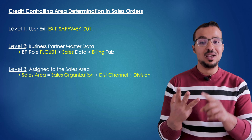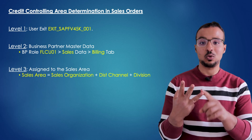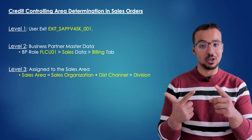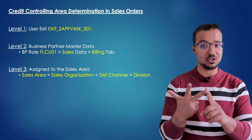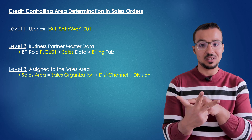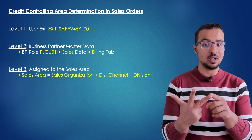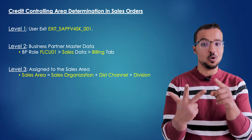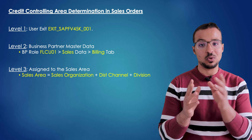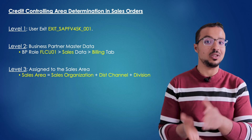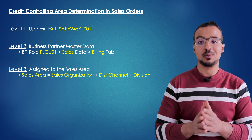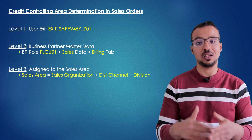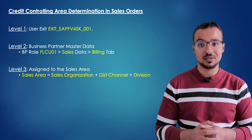The third level is: is there a credit controlling area assigned to the sales area? The sales area is the sales organization plus distribution channel plus division. This is very dynamic — we can have different credit controlling areas based on the sales organization, the distribution channel, or the division. And based on the credit controlling area, we can determine different credit segments, different credit limits, and other credit management details.